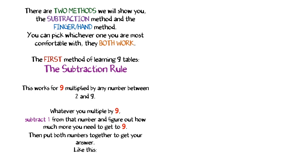The first method of learning 9 tables, the subtraction rule. This works for 9 multiplied by any number between 2 and 9. Whatever you multiply by 9, subtract 1 from that number and figure out how much more you need to get to 9. Then put both numbers together to get your answer like this.